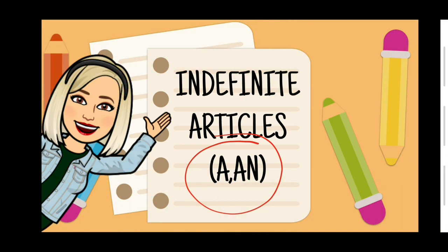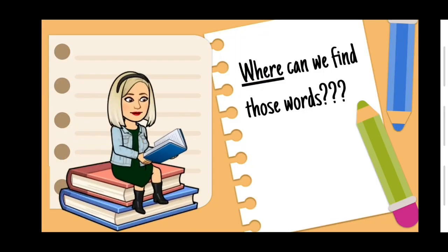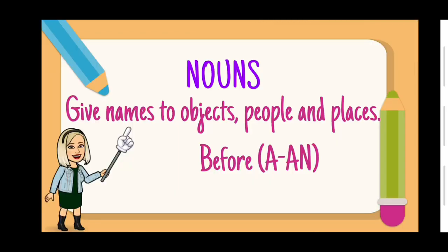So, at the beginning of the video we already asked ourselves: which are the indefinite articles? But now the second question is: where can we find those words? Well, it's really easy. If you open a book or any text, you will see these articles and they are usually next to words called nouns. Do you remember what a noun is? Nouns give names to objects, people, and places. In simple words, a noun is an object, a person, or a place.